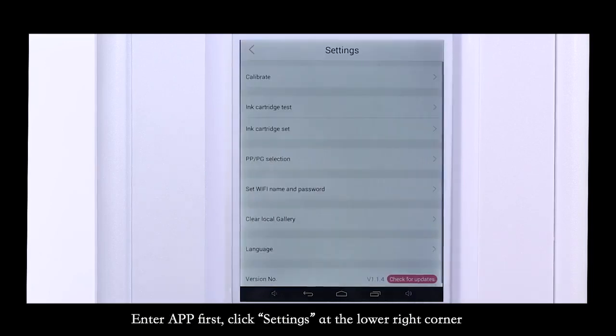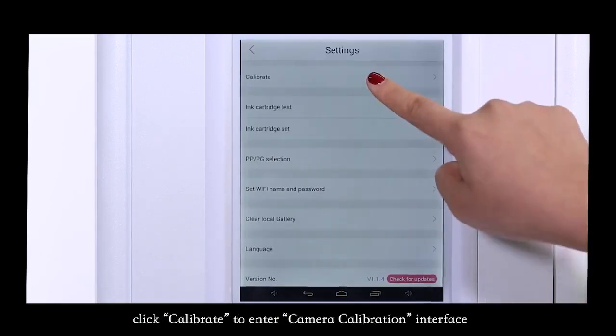Enter the app first. Click Settings at the lower right corner. Click Calibrate to enter the camera calibration interface.